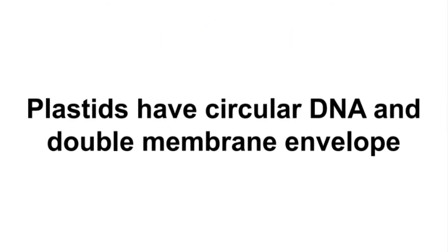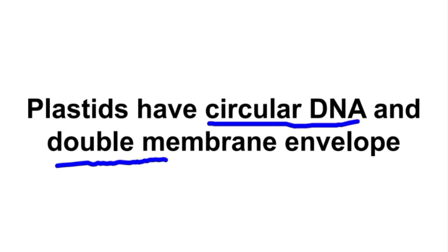In plastids, you will see that they have a circular DNA and they are covered by a double membrane. So, if you see a cell organelle that has a circular DNA, is surrounded by a double membrane, and stores food, you will say that it is a plastid.